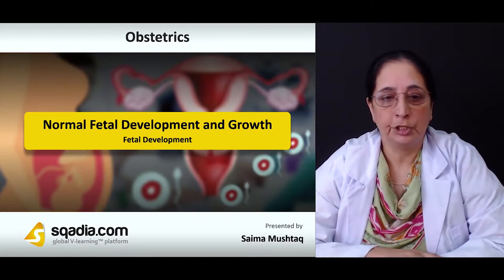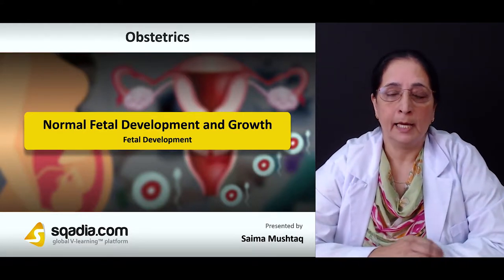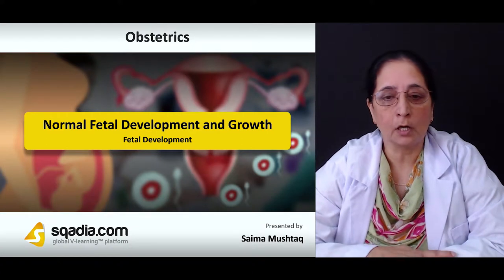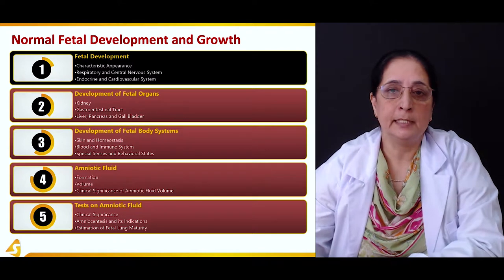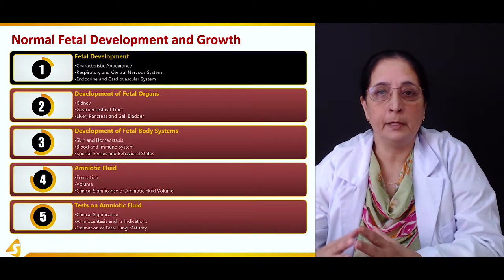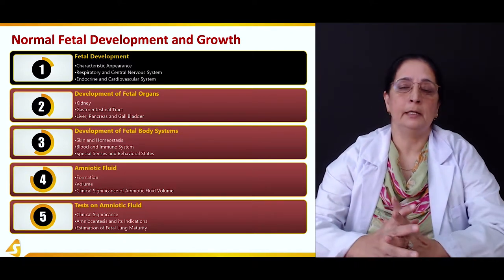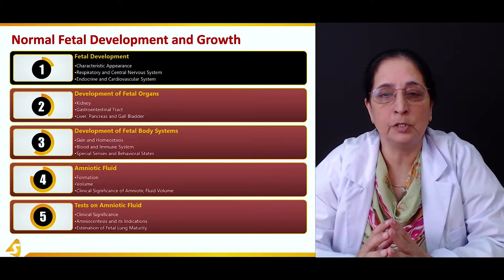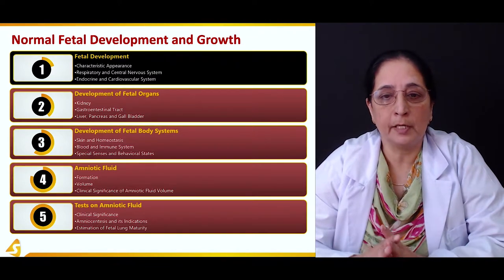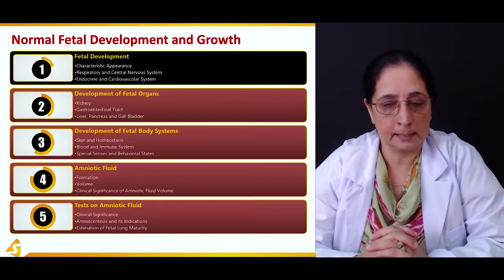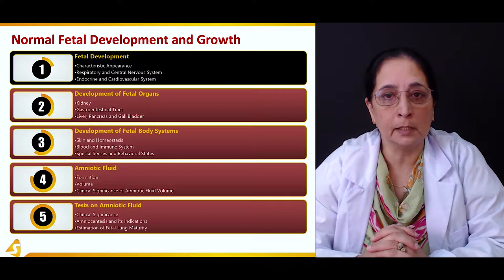Let's start with the first section of the lecture on normal fetal development and growth. In this section we will specifically talk about fetal development. The section is divided into three parts: the features specific to fetal growth, respiratory and central nervous system development, and the endocrine and cardiovascular system.